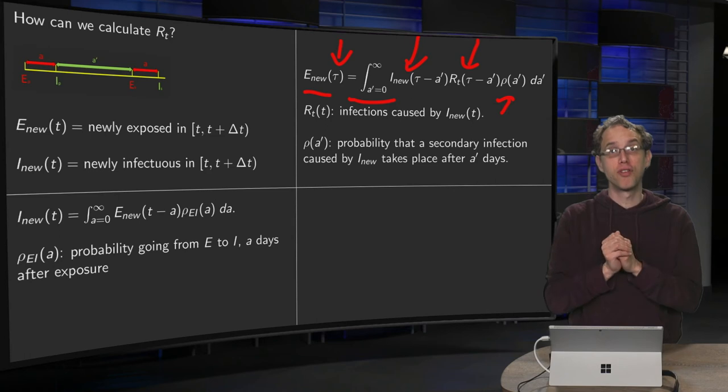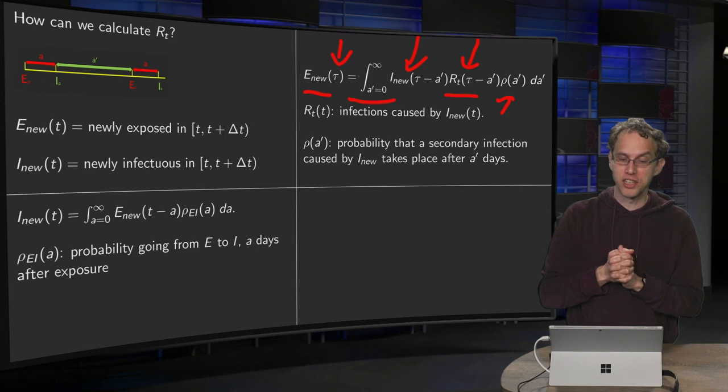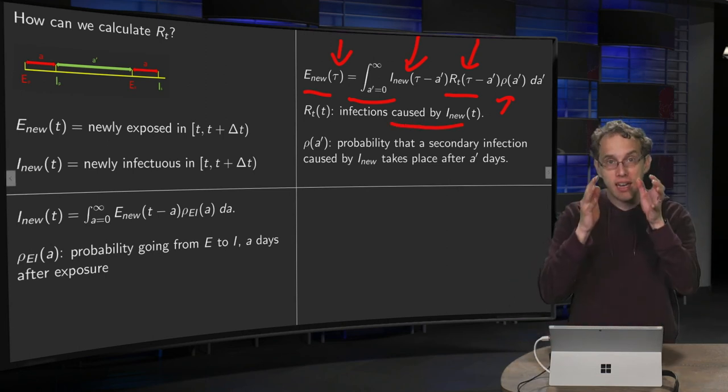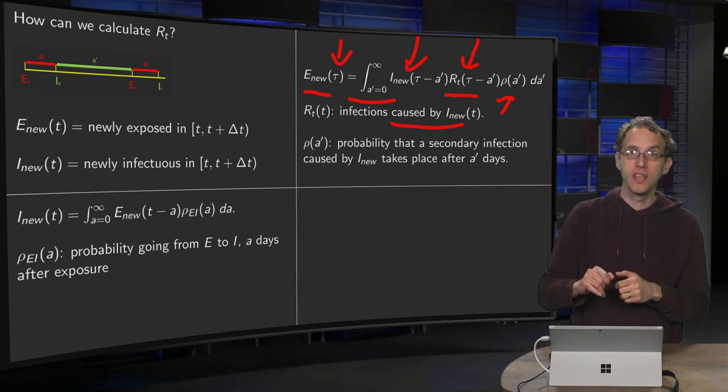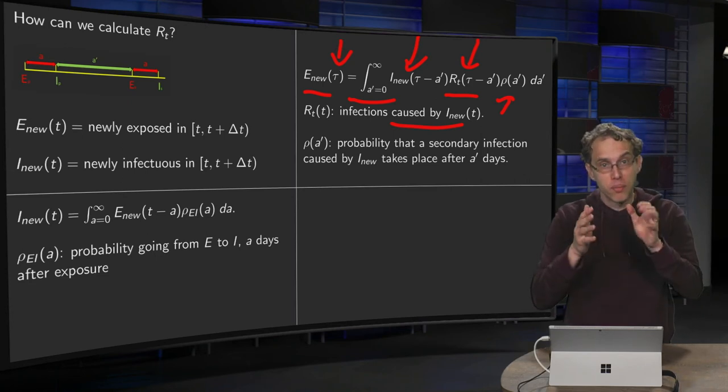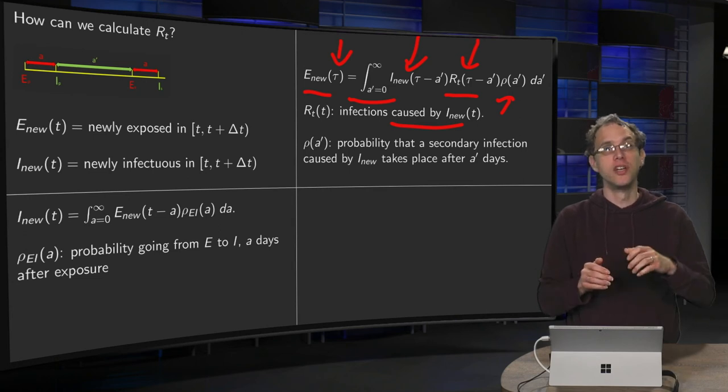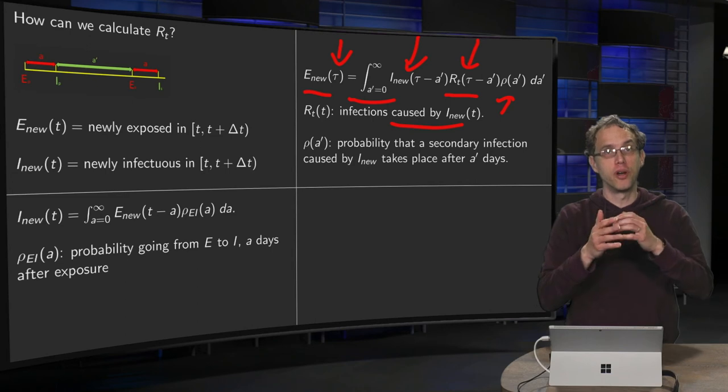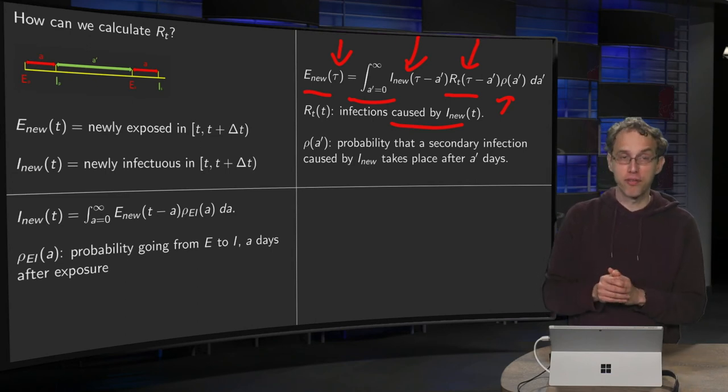And then we get our newly exposed people at time tall. And within this formula we have our desired R_t, that's the quantity we are interested in, because those are the new infections caused by I_new. And rho of a prime is some probability distribution, which we have to determine beforehand for every specific infection.